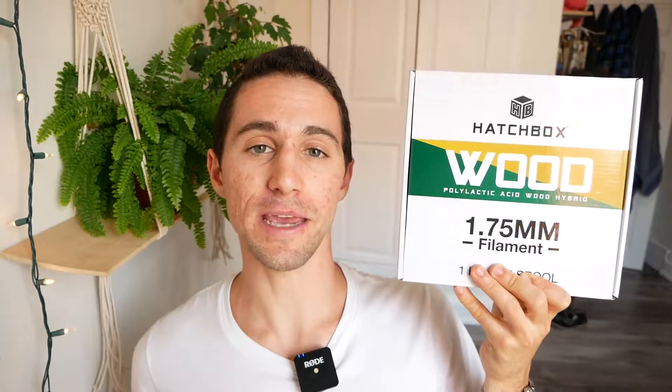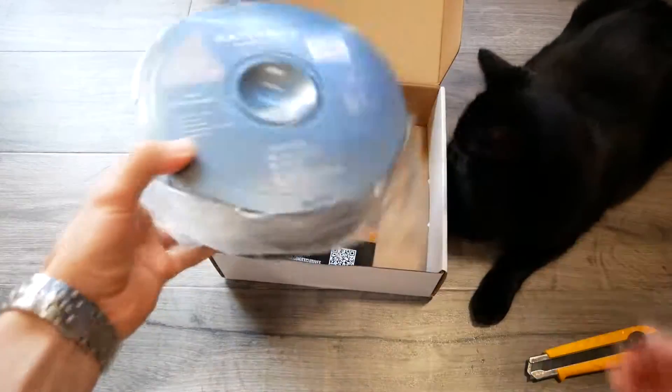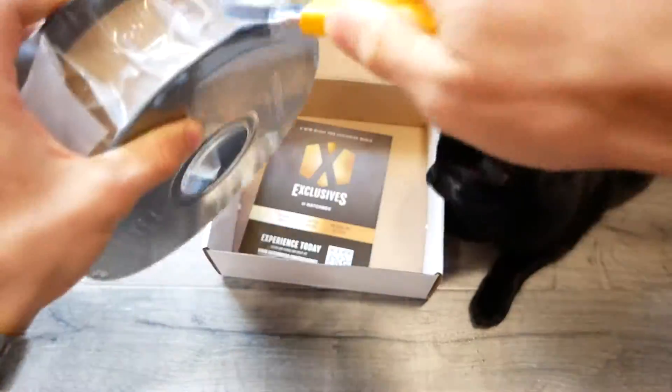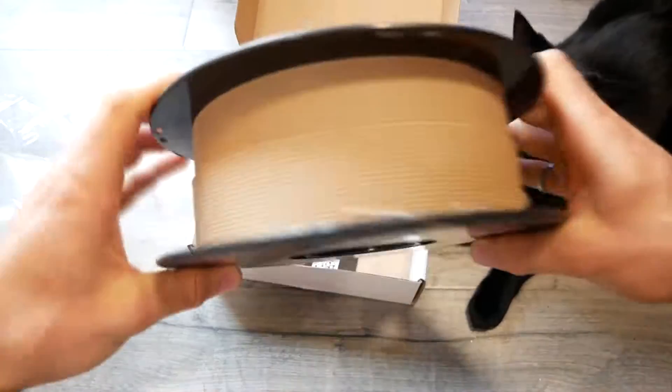I recently picked up a spool of this wood 3D printer filament made by Hatchbox. Now this stuff isn't entirely wood, it's actually a composite material made of a mixture of wood fibers and PLA which is a common plastic used in 3D printing.